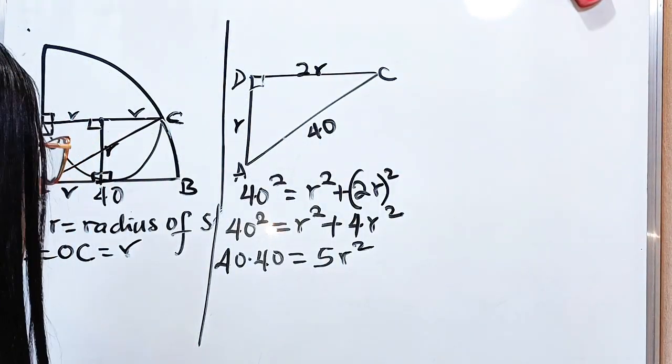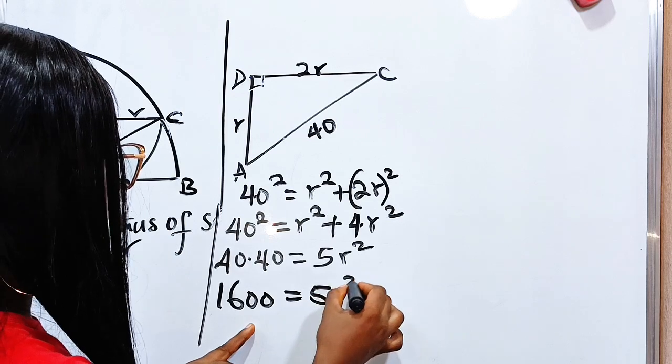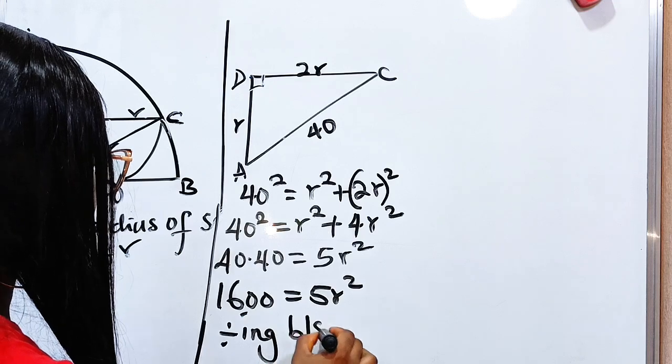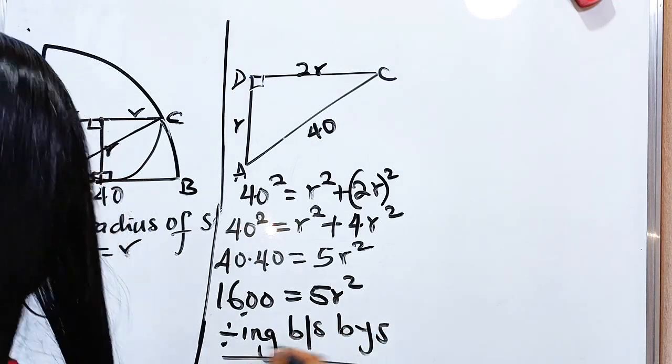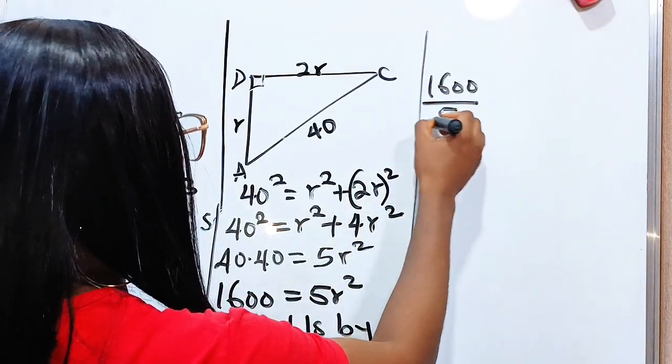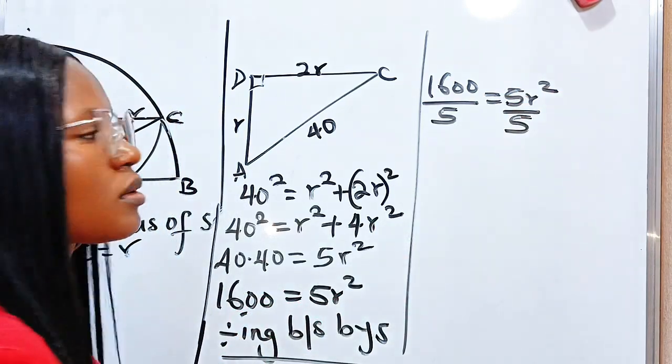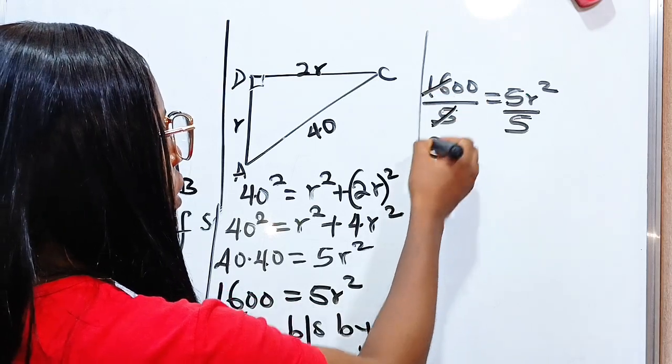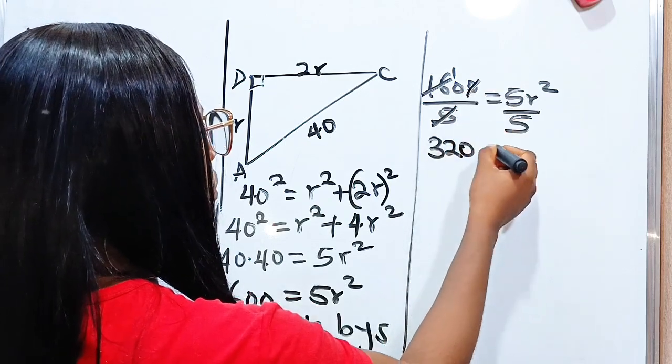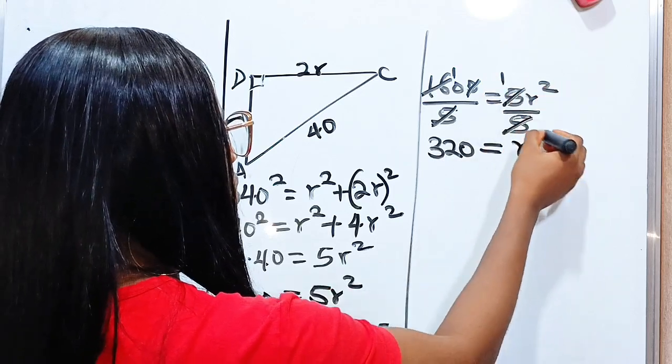4 times 4 is 16 with two zeros, so 1600 equals 5r². Dividing both sides by 5: 1600 divided by 5 equals r². 16 divided by 5 is 3.2, so 320 equals r².